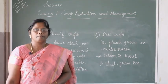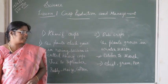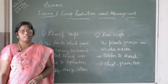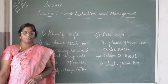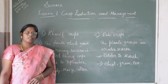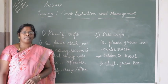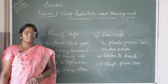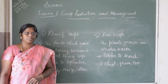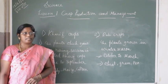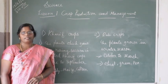Before we conclude, let us recall what we studied today. First, agriculture: growing plants to get food and other useful products is called agriculture. Crops: when the same kind of plants are cultivated at the same place on a large scale, it is called a crop. The two types of crops are Kharif crops and Rabi crops. That's all for today. Thank you. Have a good day.